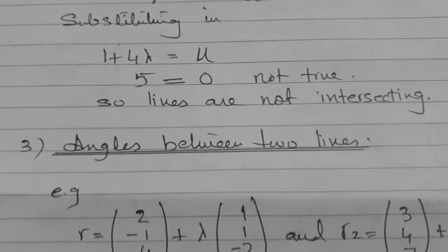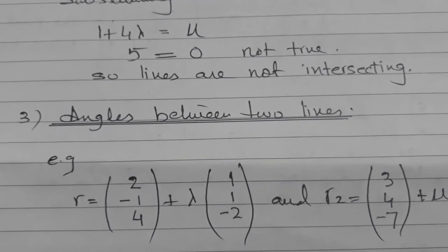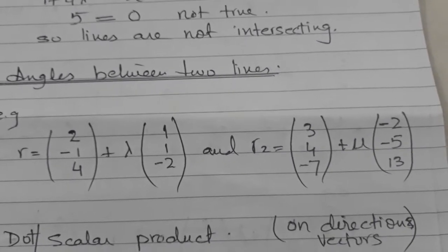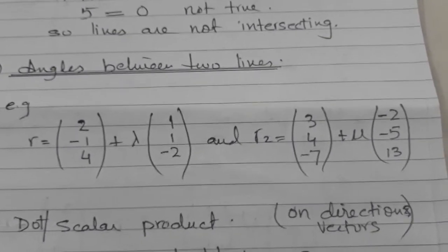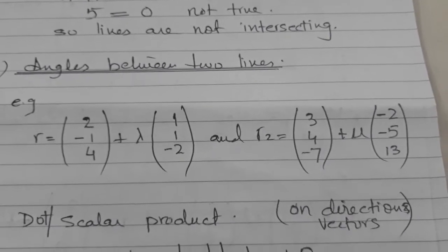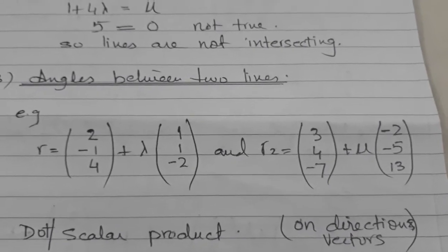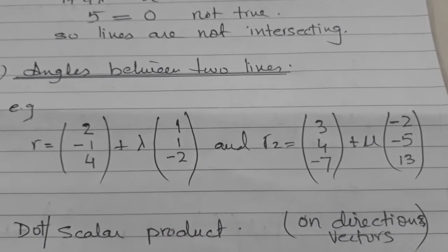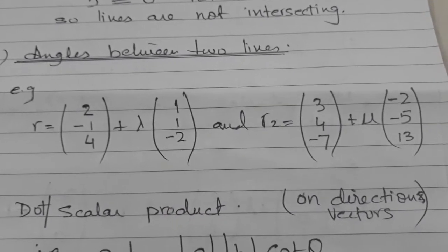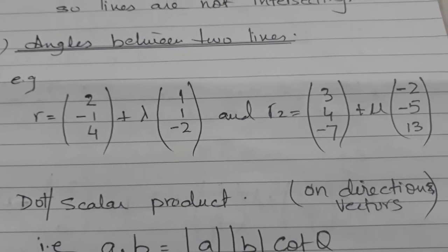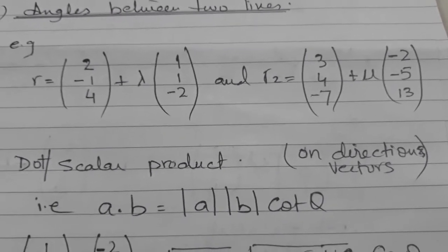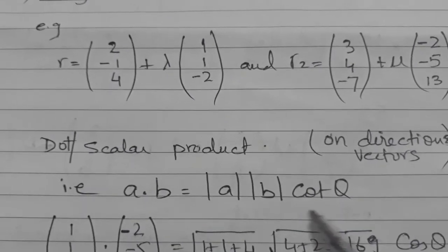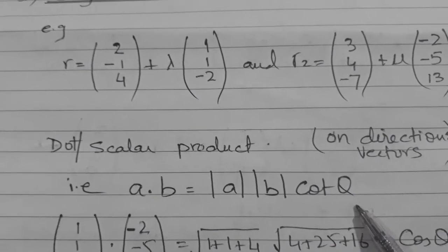Next concept: angle between two lines. When we find the angle between two lines, we apply the concept of dot product, or scalar product, and it is applied on the direction vectors of the lines. We have studied this previously — when finding the angle between two vectors, we apply the dot product formula.